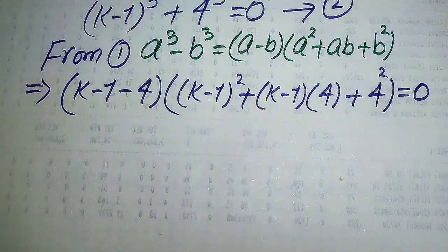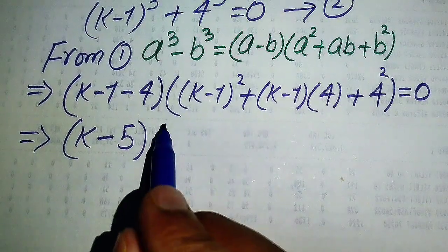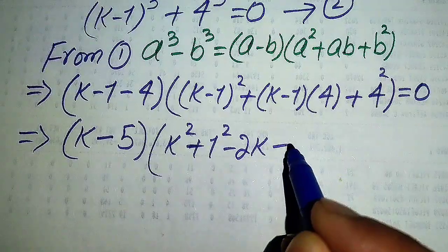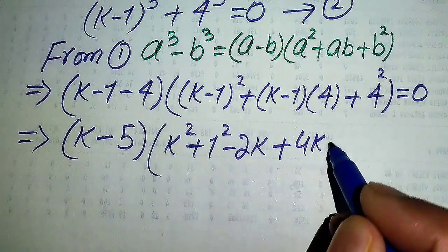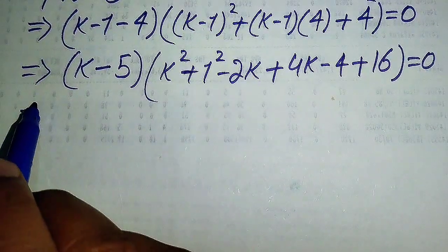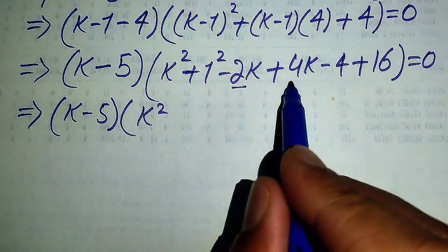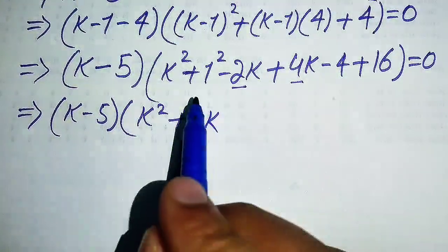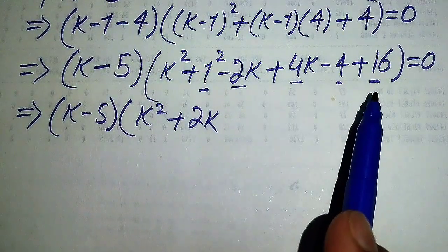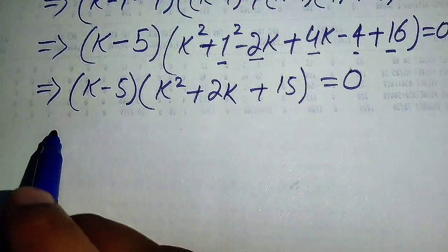We simplify: k-1-4 becomes k-5. Expanding the quadratic part: (k-1)² = k² - 2k + 1, and multiplying 4 on both terms gives 4k - 4, plus 4² = 16. So the equation becomes (k-5)(k² + 2k + 13) = 0. Note: -2k + 4k = +2k, and 1 - 4 + 16 = 13.